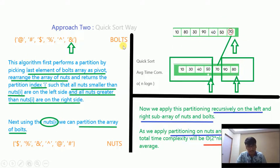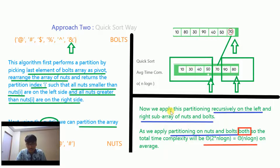This is how the algorithm works for nuts and bolts. We pick the last element of the bolt array as pivot and compare it with the nuts array to find its match. We then divide into two parts and solve each recursively to get the optimal answer. We apply partition recursively on the left and right sub-arrays of both bolt and nut. Since quicksort's average time complexity is O(n log n) and we apply partition on both arrays, it becomes 2·n log n, but since 2 is a constant, the average time complexity is O(n log n) — better than brute force.